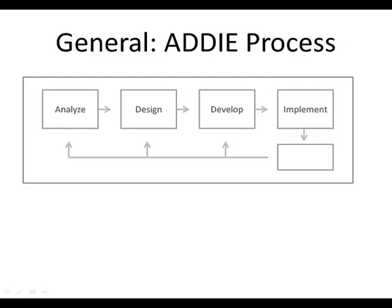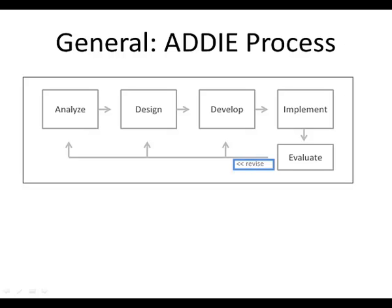The final phase in the ADDIE process is Evaluation. There are two types: formative evaluation, in which instructional designers get feedback from learners and experts on how the instruction is working and how it might be improved, with the purpose of revising materials so they can be as effective as possible when fully implemented; and summative evaluation, which is designed to find out whether the instruction worked and how well it worked.